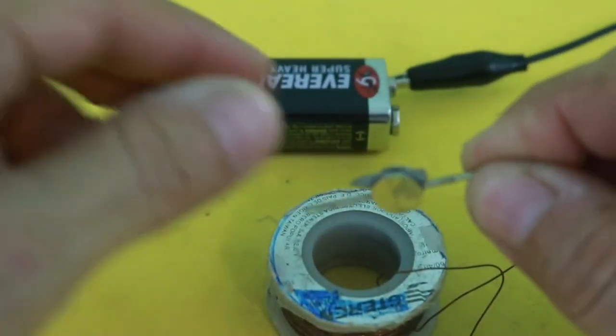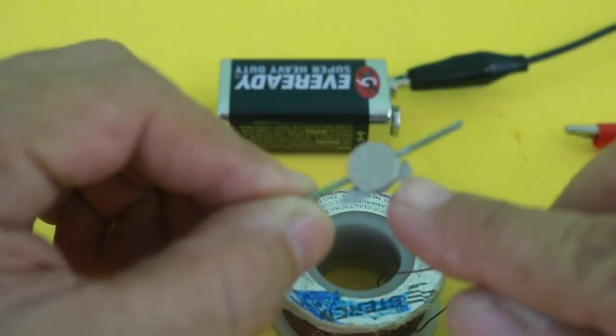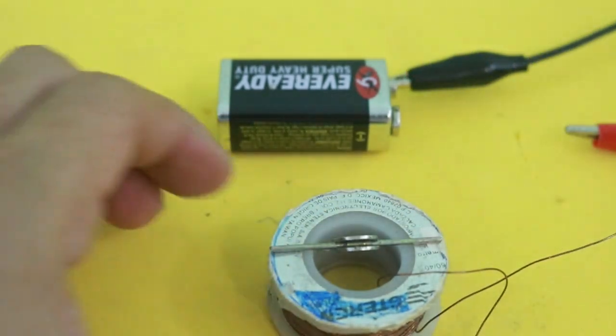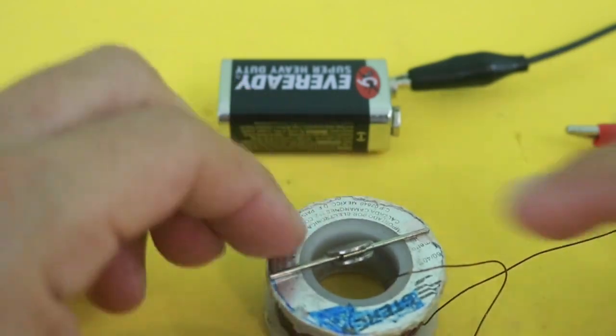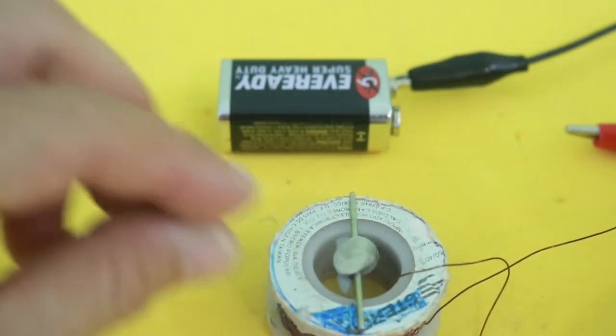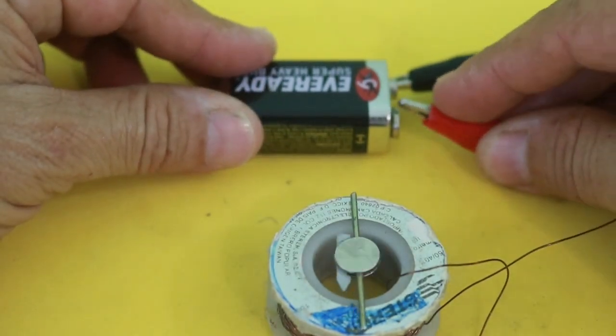This little magnet has a piece of metal so it is bottom-heavy and will remain semi-vertical. Now, let me apply current to the coil and see what happens.